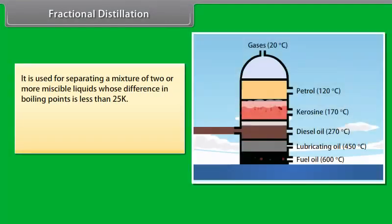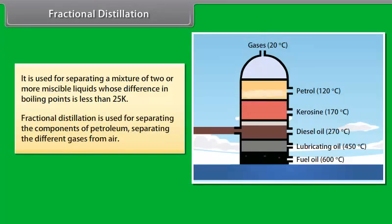Fractional distillation. It is used for separating a mixture of two or more miscible liquids whose difference in boiling points is less than 25K. Fractional distillation is used for separating the components of petroleum, separating different gases from air, etc.